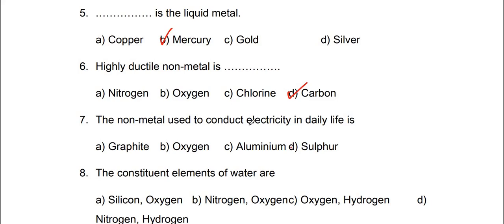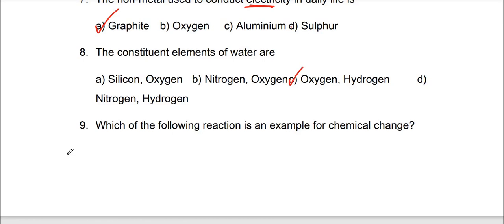Seventh, the non-metal used to conduct electricity. So, used to conduct electricity as the non-metal na graphite. Eighth one, the constituent elements of water are oxygen and hydrogen. Option C.